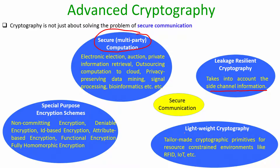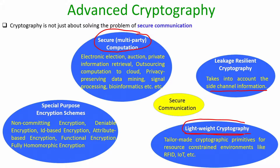There is also a branch called lightweight cryptography, which studies the design of cryptographic primitives for resource-constrained environments like RFID, IoT, and wireless sensor networks. A key bottleneck in such environments is that computing speed is very low, so we cannot use typical cryptographic primitives that operate with key sizes of 256 bits (symmetric) or 1024 bits (public key). The question is whether we can design new cryptographic primitives requiring less computation, and the branch dedicated to this is called lightweight cryptography.